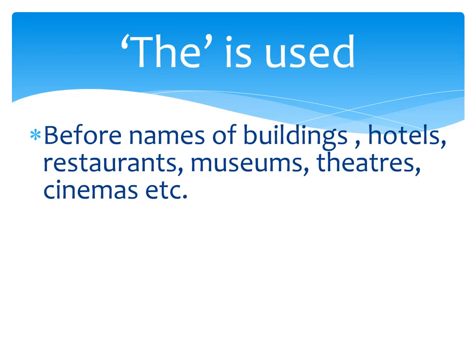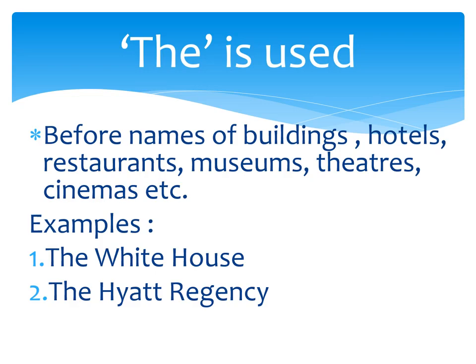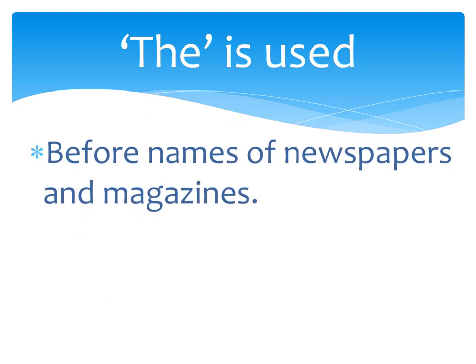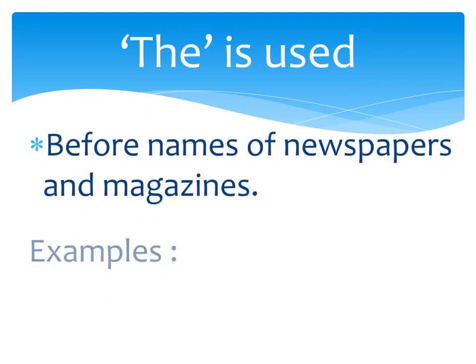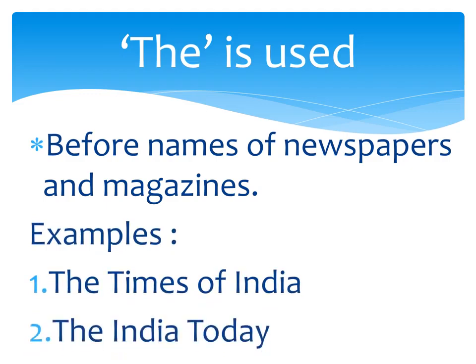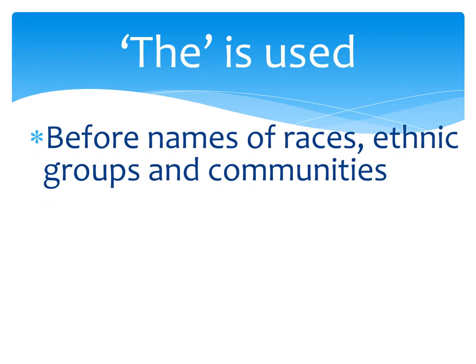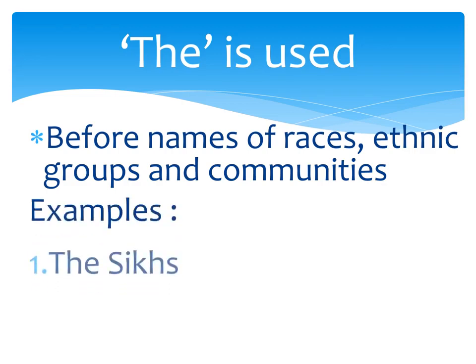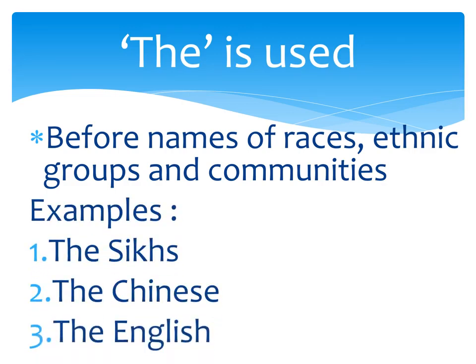Use number twelve: before names of buildings, hotels, restaurants, museums, theatres, cinemas, etc. Note the pronunciation: it is 'restaurant,' not 'restraunt.' For example, the White House, the Hyatt Regency, the Taj Mahal. Before names of newspapers and magazines — for example, the Times of India, the India Today. Before names of races, ethnic groups, and communities — for example, the Sikh, the Chinese, the English. Here we are talking about Chinese people or English people, not the languages.